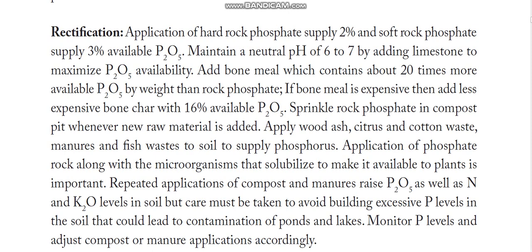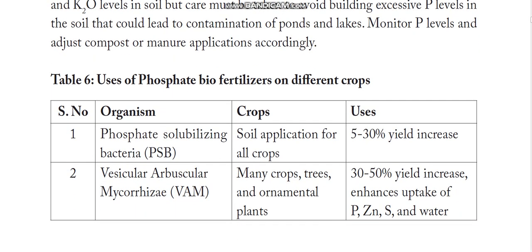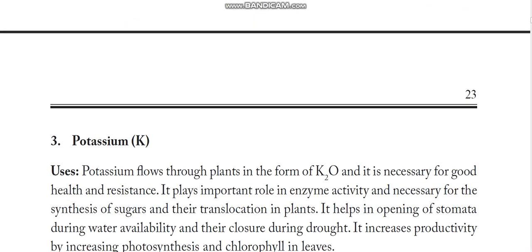Phosphorus levels in nearby lakes and ponds are to be monitored. Regarding phosphate bio-fertilizers for different crops: phosphate-solubilizing bacteria and vesicular-arbuscular mycorrhizae are the two organisms that supply abundant quantities of phosphorus to plants.